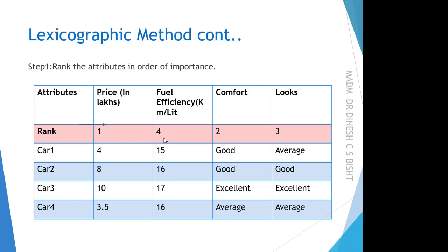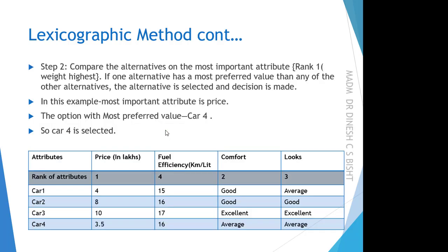I have ranked them on a scale of 1 to 4, since there are 4 attributes. The most preferred attribute gets rank 1, the second preferred gets rank 2, the third preferred gets rank 3, and the last preferred attribute gets rank 4. So ranking is done — Step 1 is completed.